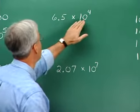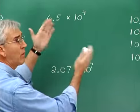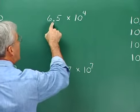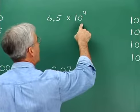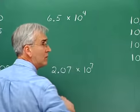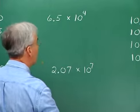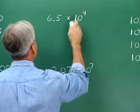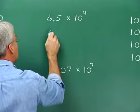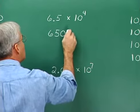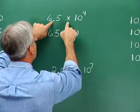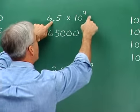Sometimes you'll see a number in scientific notation and want to write its expanded form. Here the number is in scientific notation and we want to write it in expanded form. 6.5 times ten to the fourth — multiplying by powers of ten just slides the decimal some number of positions to the right. In this case, it's four positions: six, five, zero, zero, zero. We slide the decimal one, two, three, four to the right.